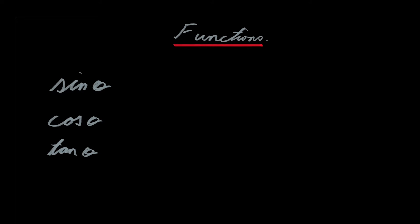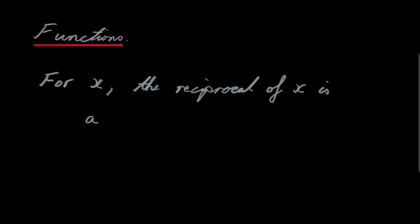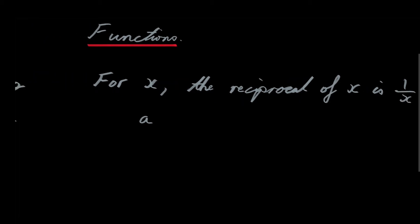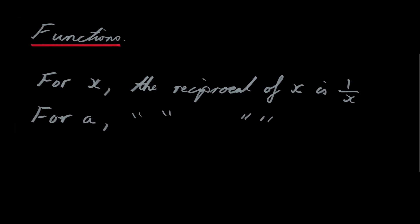Now, those are our three basic trigonometric functions. What's a reciprocal? Well, a reciprocal is, if we have some variable x, the reciprocal of x is just 1 over x. Or for some fixed constant a, the reciprocal of a is 1 over a.